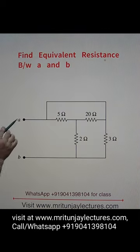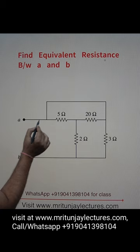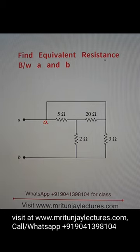Now, question of the day: determine equivalent resistance between a and b. So how can we determine it? That point is a, that point is also a. Why? Because both are same potential.